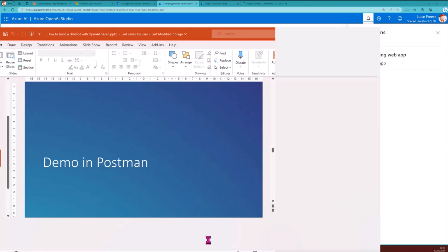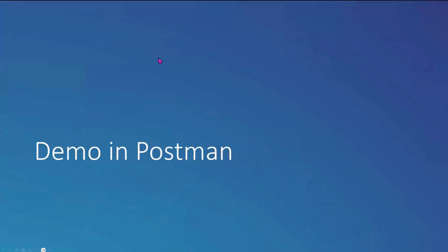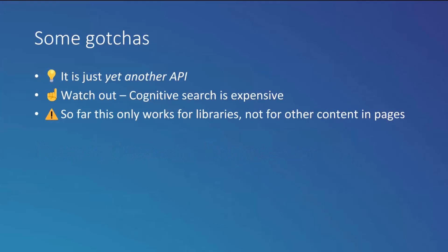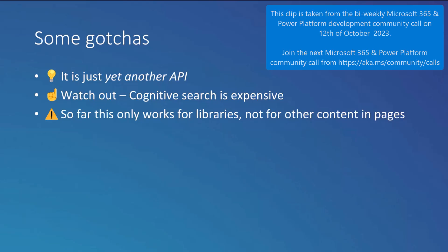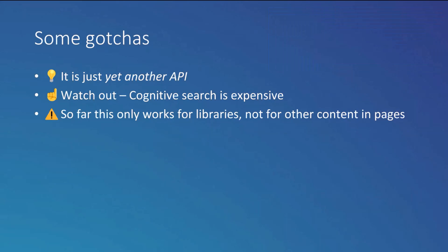A few gotchas to share. First, OpenAI is cool but it's just another API — nothing truly special, we send requests and get data back. Second, please watch out because Cognitive Search can be super expensive. If you don't need the service anymore, delete the resource and recreate it when needed. Third, what I showed today only works for data in document libraries — it does not work for content on SharePoint pages or lists. We'll need to wait for support for other content types. Thank you and happy building!